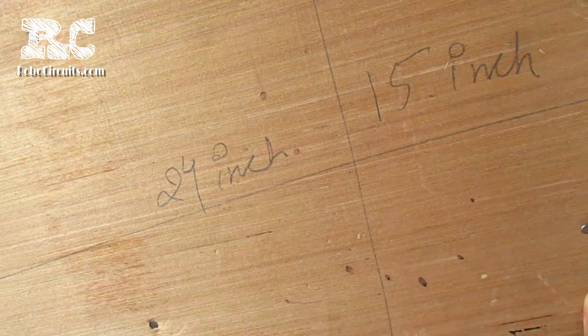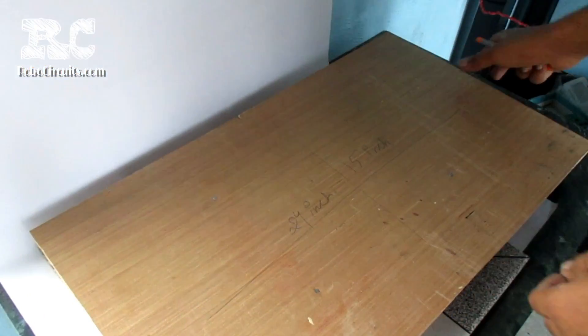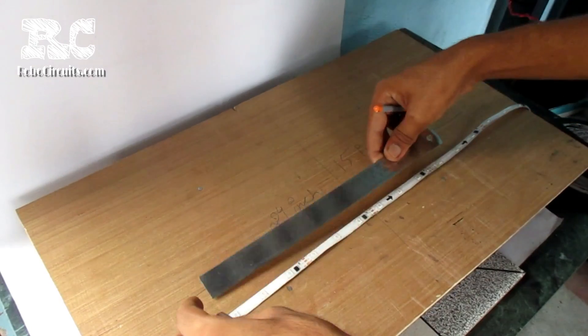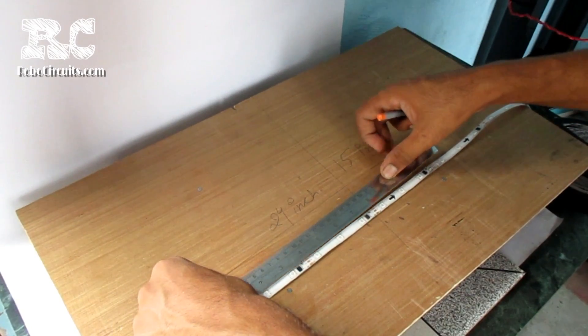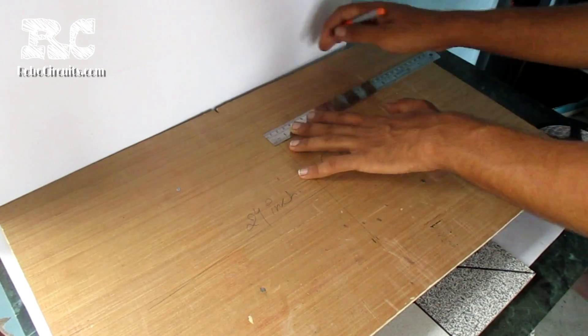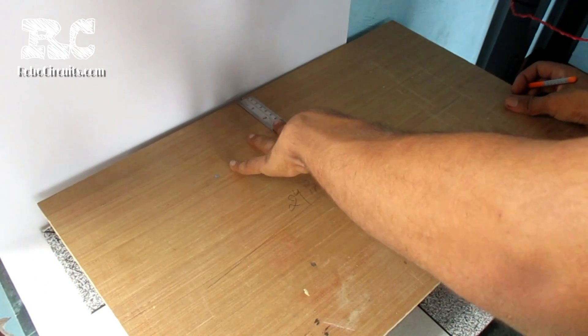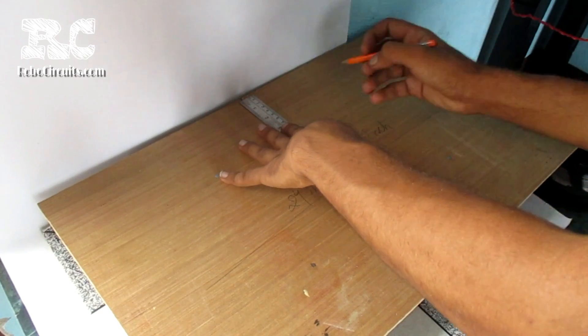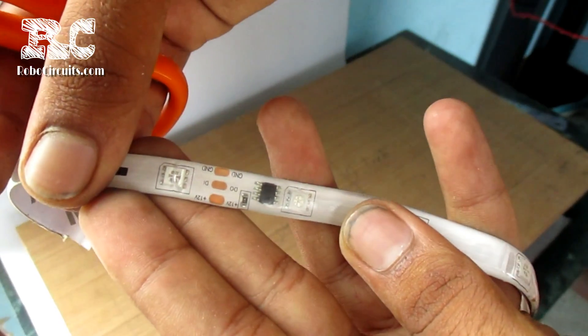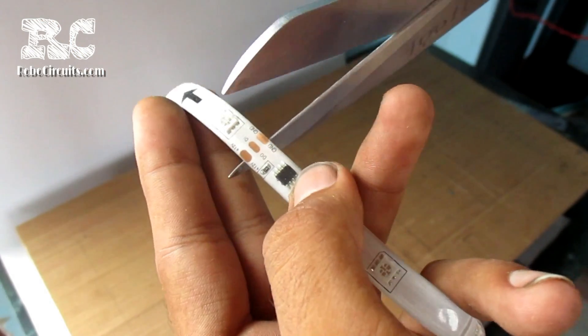Firstly I measured the length of the single LED strip and then created lining on the boards. Then I cut the LED strip from the joint given between them.